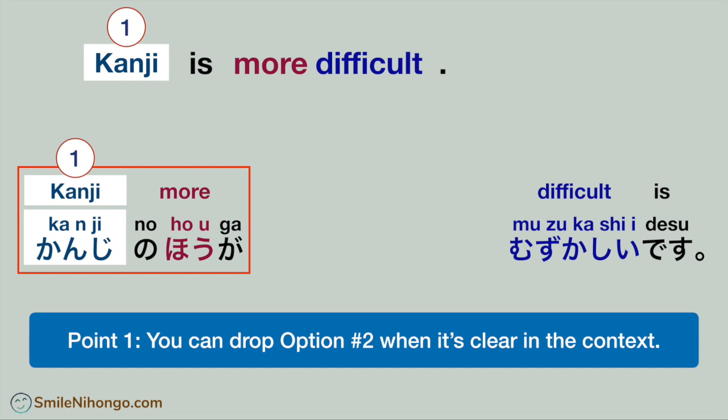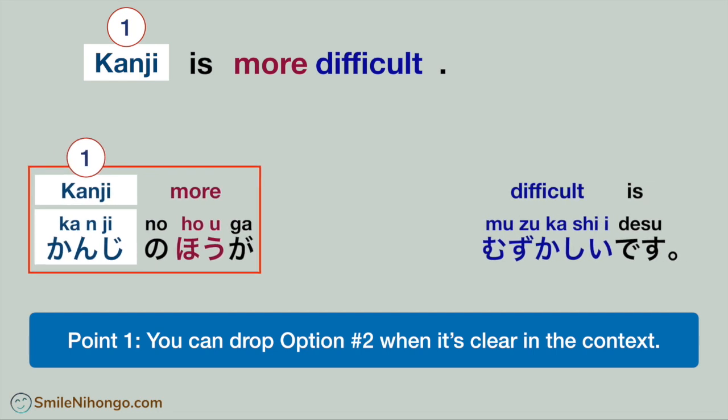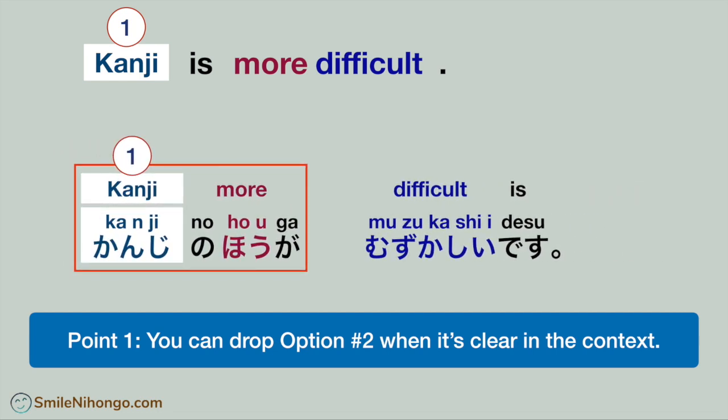For example, if you are already talking about hiragana and kanji with your friend and want to express that kanji is more difficult, you don't have to say 'hiragana yori' because your friend already knows you are comparing kanji to hiragana. Another example: when somebody asks between hiragana and kanji which is more difficult, in your reply you don't need to say 'hiragana yori.' You can simply respond: kanji is more difficult — 漢字のほうが難しいです — and that's good enough. You don't have to say the entire sentence.